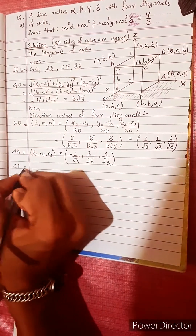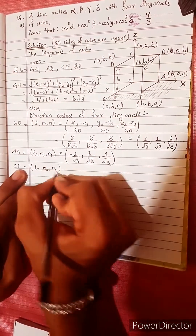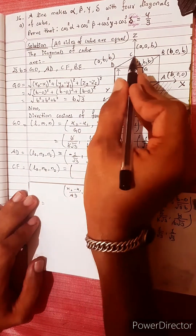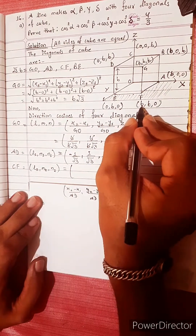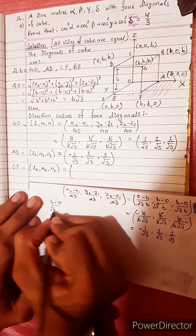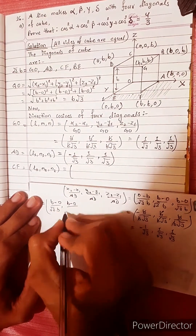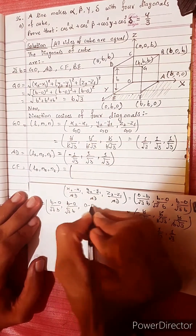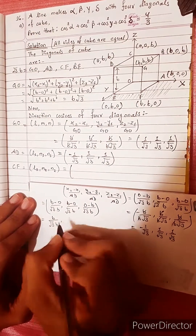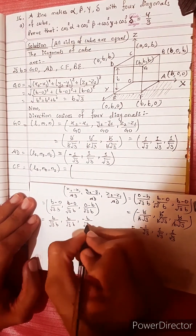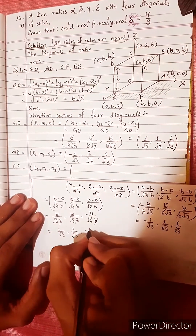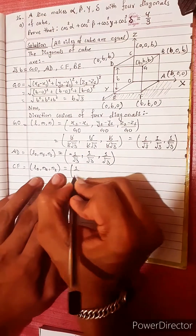For diagonal CF: L2, M2, N2 equals formula (x2 − x1). Point C to point F: (b − 0) divided by √3·b, (b − 0) divided by √3·b, (0 − b) divided by √3·b. After b cancellation: equals (1/√3, 1/√3, −1/√3).